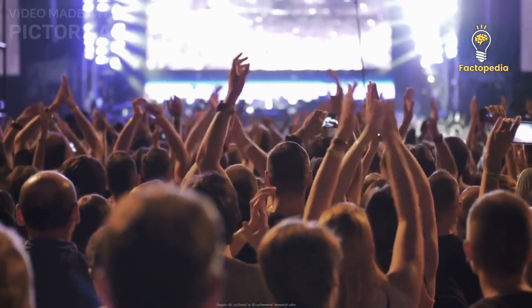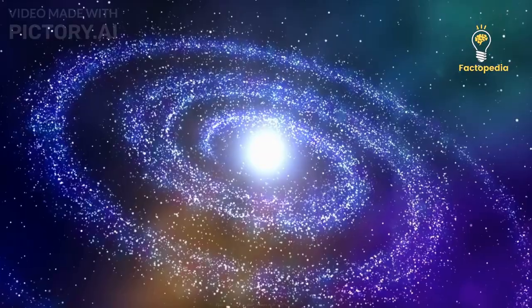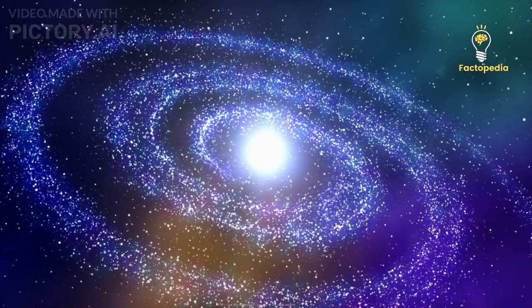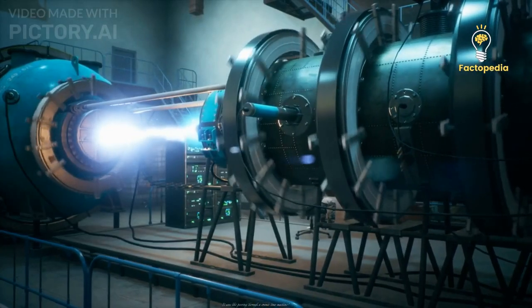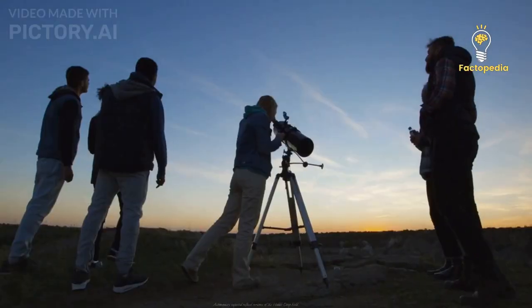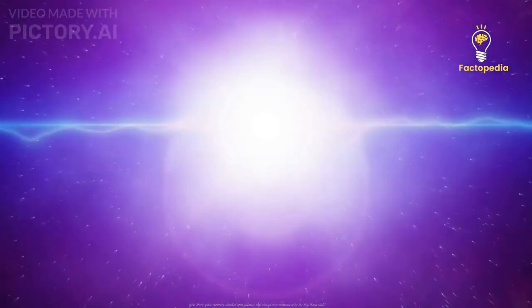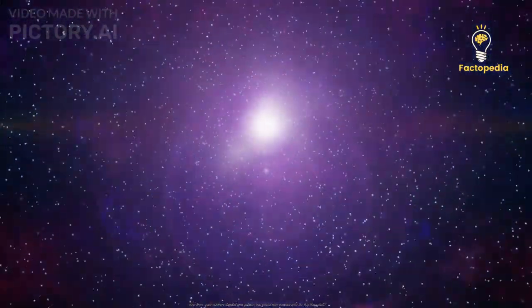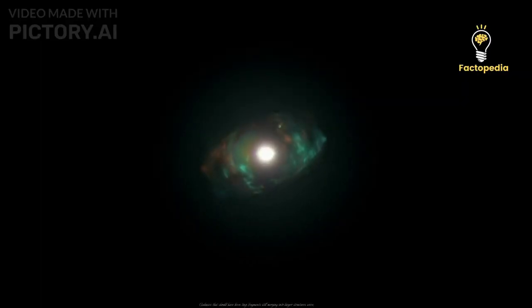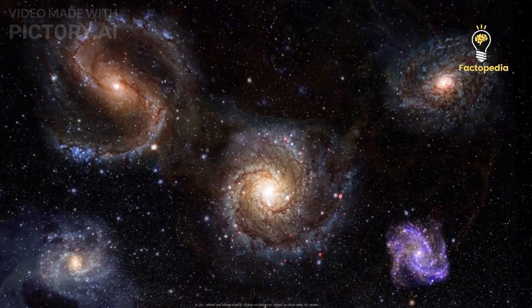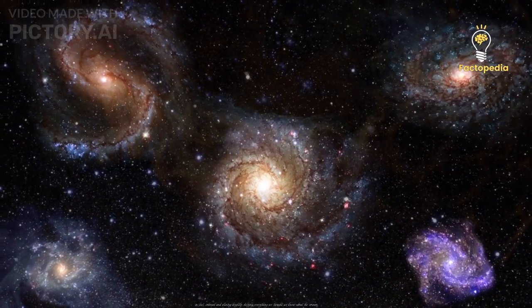Imagine the excitement in the astronomical community when Webb's lens focused on distant galaxies in the early universe. It was like peering through a cosmic time machine. Astronomers expected refined versions of the Hubble Deep Field, but what they found was far more extraordinary. These brave space explorers stumbled upon galaxies that existed mere moments after the Big Bang itself. Galaxies that should have been tiny fragments still merging into larger structures were, in fact, colossal and shining brightly, defying everything we thought we knew about the cosmos.